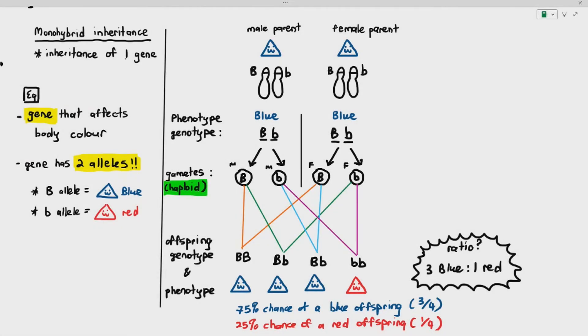In most of the previous videos pertaining to this chapter, we were looking at something called monohybrid inheritance. Monohybrid inheritance basically means the inheritance of one gene.